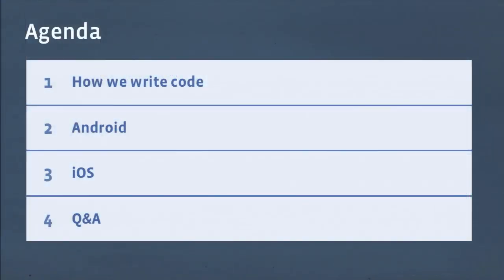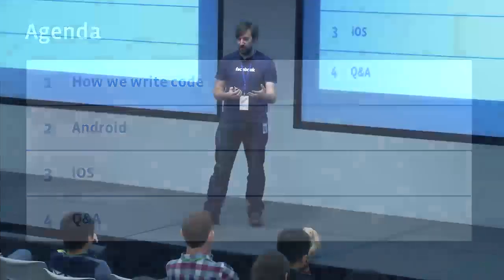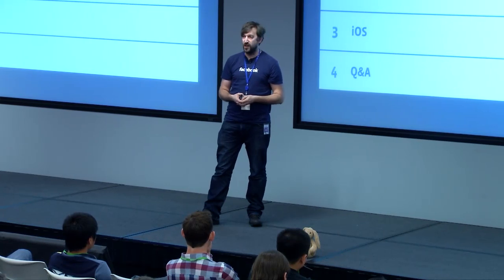So with that out of the way, quick agenda of what we're going to be talking about today. First of all, we're going to cover how we actually write code at Facebook — it doesn't magically appear. And then once we've covered how we write code and the tools that are shared between Android and iOS, we'll go on to talk about what's happening on Android and on iOS. And then finally, there'll be plenty of time for questions and hopefully answers.